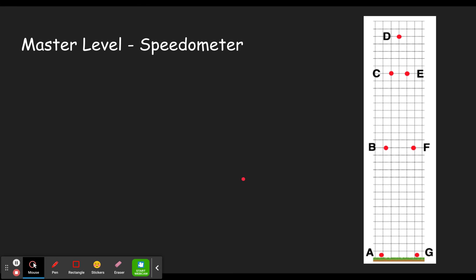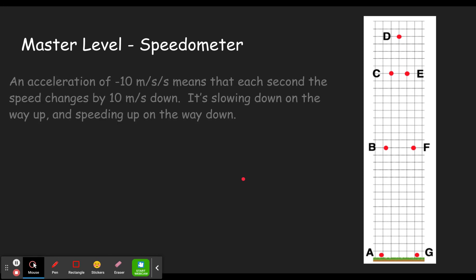And so it's important in this level to recognize that an acceleration, the acceleration of gravity is negative 10 meters per second squared. And that means that each second, the speed changes by 10 meters per second down. It's slowing down on the way up and speeding up on the way down. So if it starts out, if the problem tells you it starts out at 30 meters per second going up.